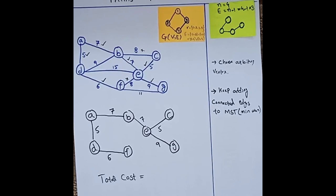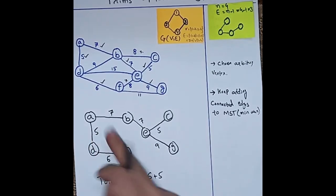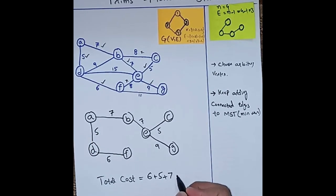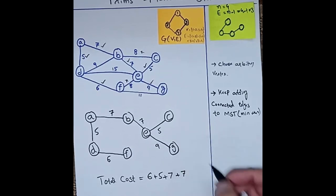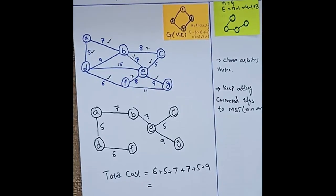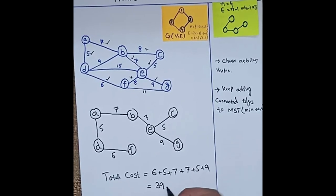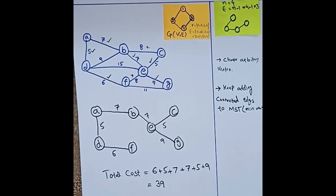Now we calculate the total cost of this spanning tree. The total cost is the sum of all weights: 6 + 5 + 7 + 7 + 5 + 9 = 39. So the total cost of this minimum spanning tree constructed using Prim's algorithm is 39.